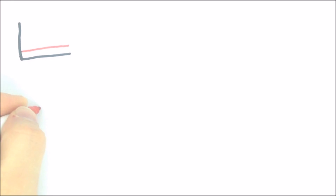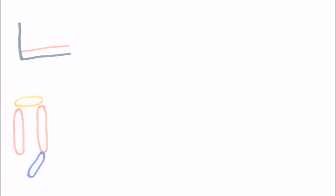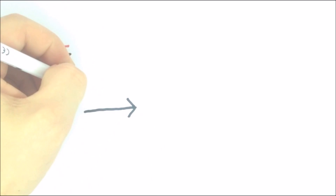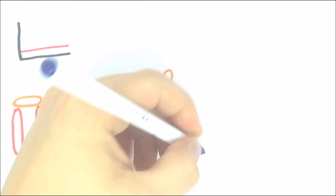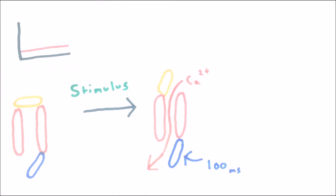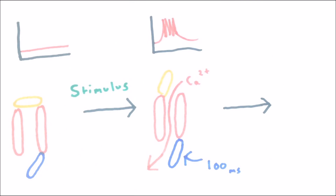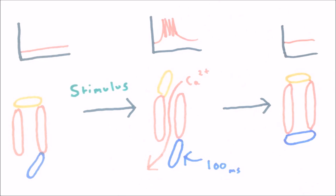To see how this results in bursting, imagine the cell undergoes inhibition and the membrane potential is hyperpolarized for 100 milliseconds — the inactivation gate is therefore open. Now, if the neuron is suddenly depolarized by an input, the activation gate will rapidly open. The inactivation gate will start to close but will take 100 milliseconds to do so. During this time, both gates are open and positively charged calcium rushes into the neuron, triggering a rapid succession of action potentials until eventually the inactivation gate closes and the neuron stops firing.